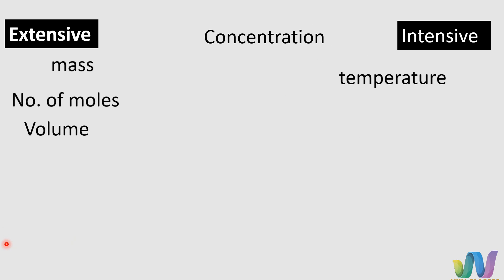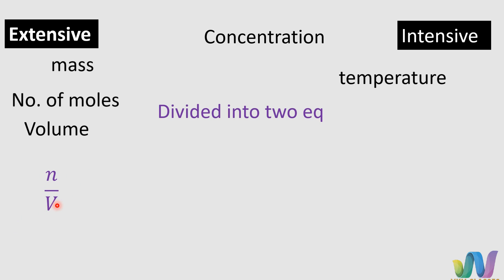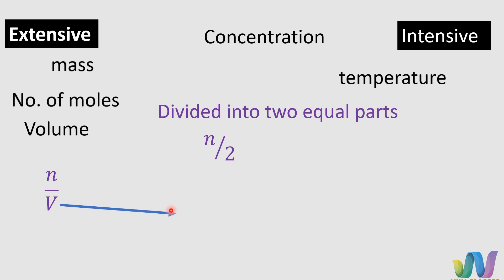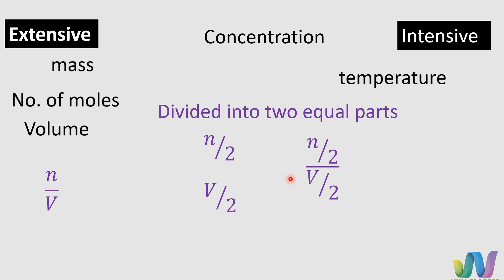For concentration: concentration is nothing but N by V, that is number of moles divided by volume. Now, suppose we are dividing the given solution into two equal parts — number of moles will become N/2, volume will become V/2, and concentration will be N/2 divided by V/2, which equals N/V. The concentration after division into two equal parts is the same as the concentration before dividing.